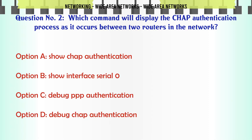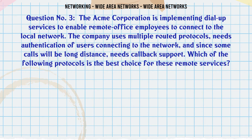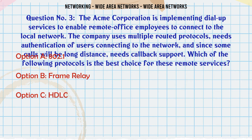Which command will display the CHAP authentication process as it occurs between two routers in the network? A. Show CHAP authentication. B. Show interface serial 0. C. Debug PPP authentication. D. Debug CHAP authentication. The correct answer is C: Debug PPP authentication.